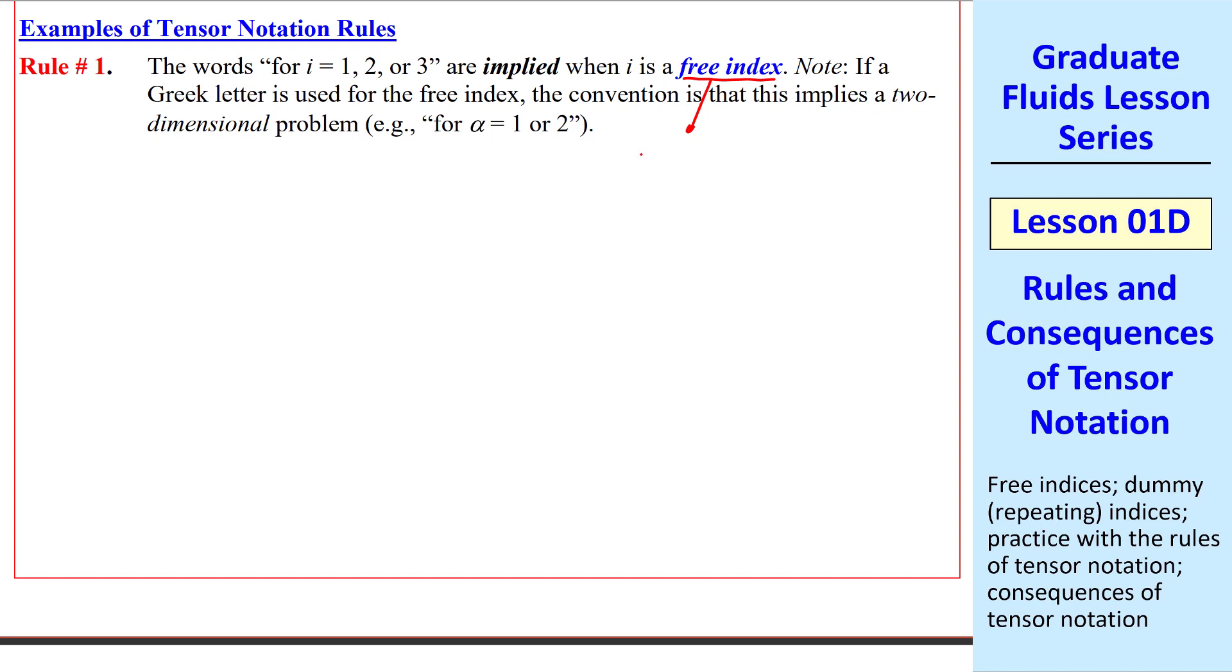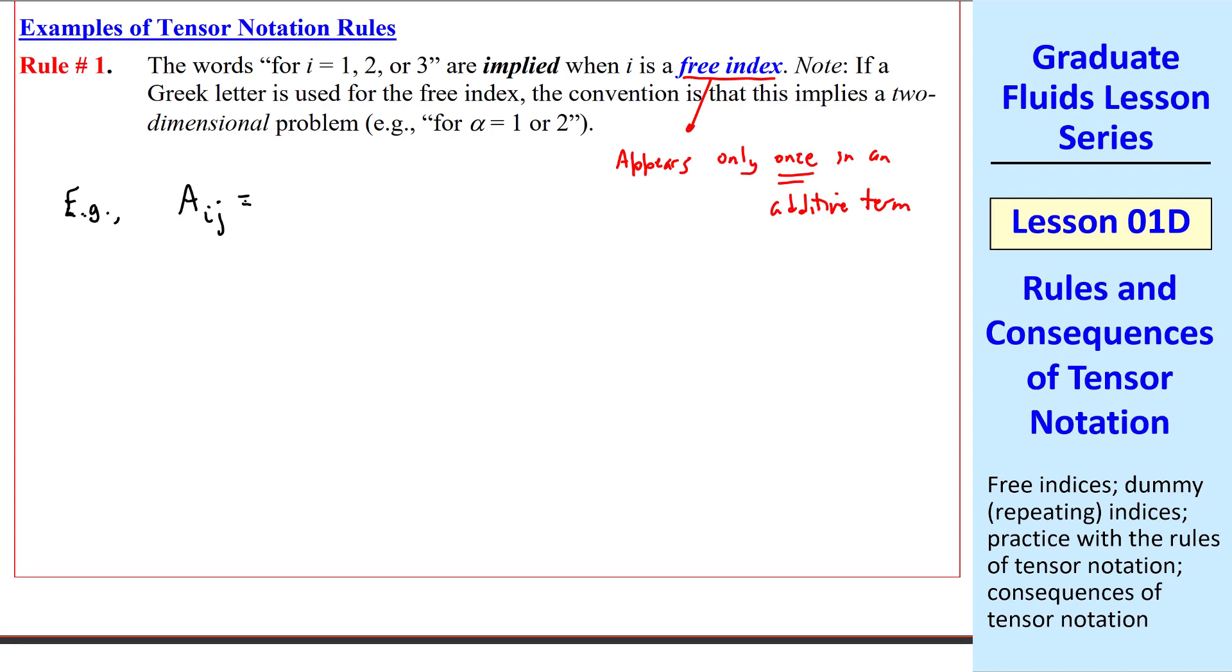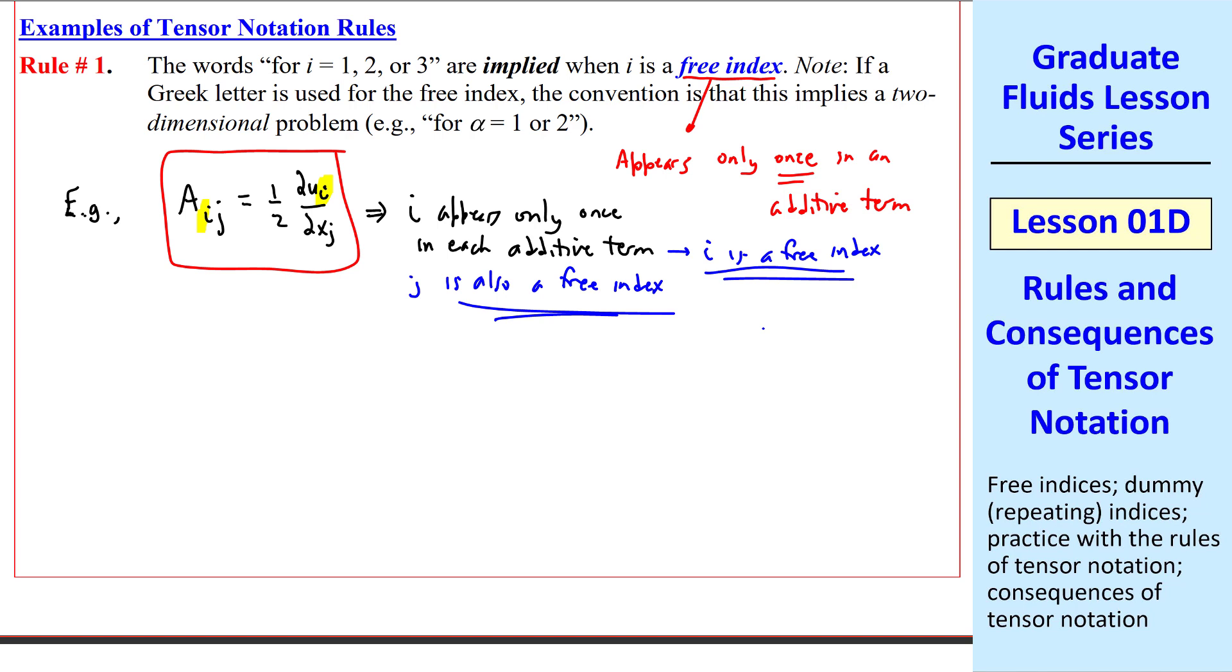The definition of a free index is that it appears only once in an additive term. For example, suppose aij is defined as 1 half del ui del xj. Notice that i appears only once in each additive term. It appears twice in the equation, but that does not make it a repeated variable. i is thus a free index. Similarly, j appears only once in each additive term. j is also, therefore, a free index.